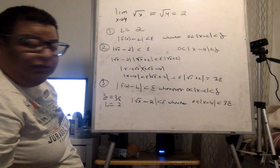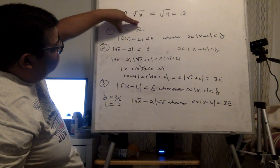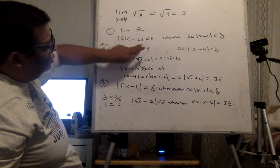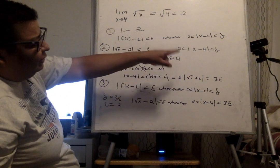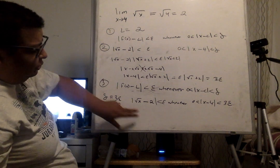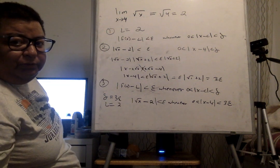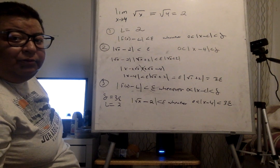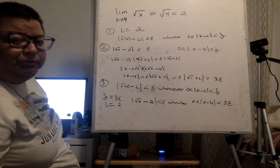And that completes the final proof. To summarize: first we find L, then in the scratch work we relate |f(x) - L| with |x - c| to find delta, and once we find delta we write the final proof statement. That completes the proof. Thank you very much — don't forget to subscribe to my YouTube channel, I appreciate it!